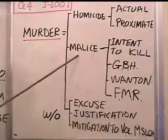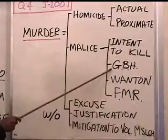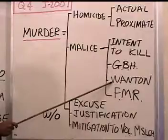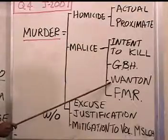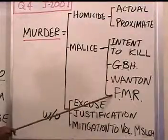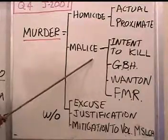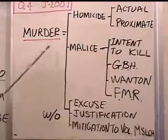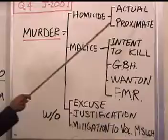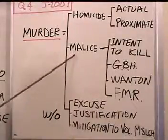Intent to engage in wanton, willful conduct with utter disregard of a high likelihood of great bodily harm or death — no. Felony murder rule — there's no felony going on here. So you cannot find malice. Dan probably did not commit the homicide because of the proximate cause component, and clearly did not have the malice. So already it is impossible to find murder.